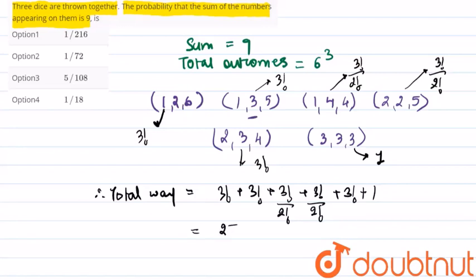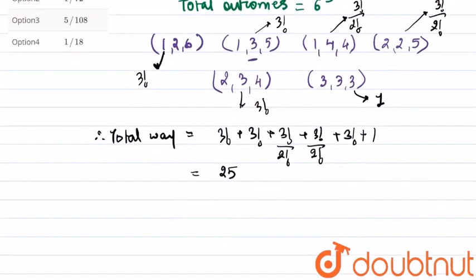number of cases is 25. And the probability we need to find for appearing sum of 9 is 25 upon the total outcome 6³.